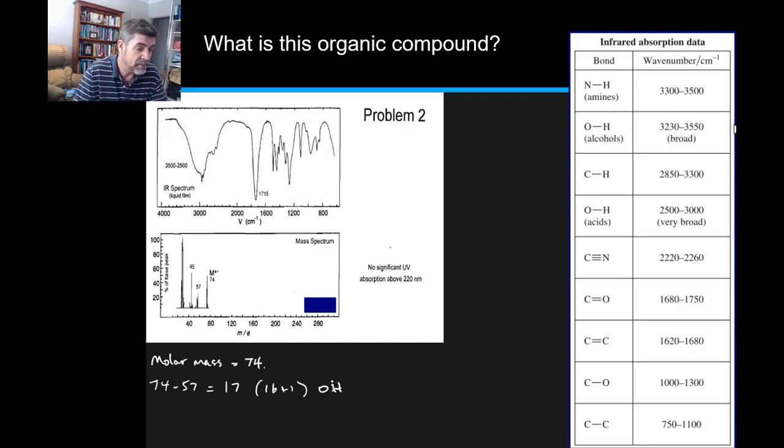There's another peak here at 45. 74 minus 45, now this time I have 29. Now 29 is also an interesting one that I've looked at in the past. You may want to have a look at a few different variations, and of course there can be more than one. But one 29 that I know comes up quite often is an ethyl group.